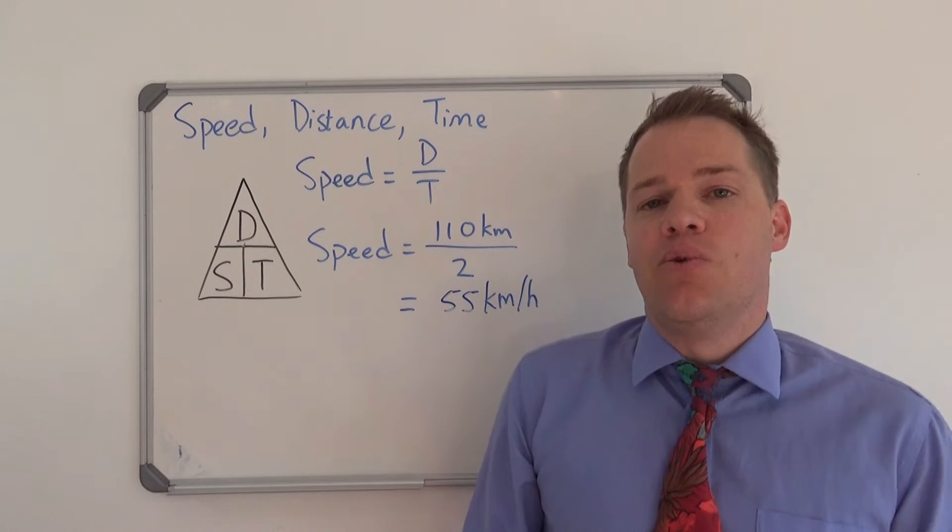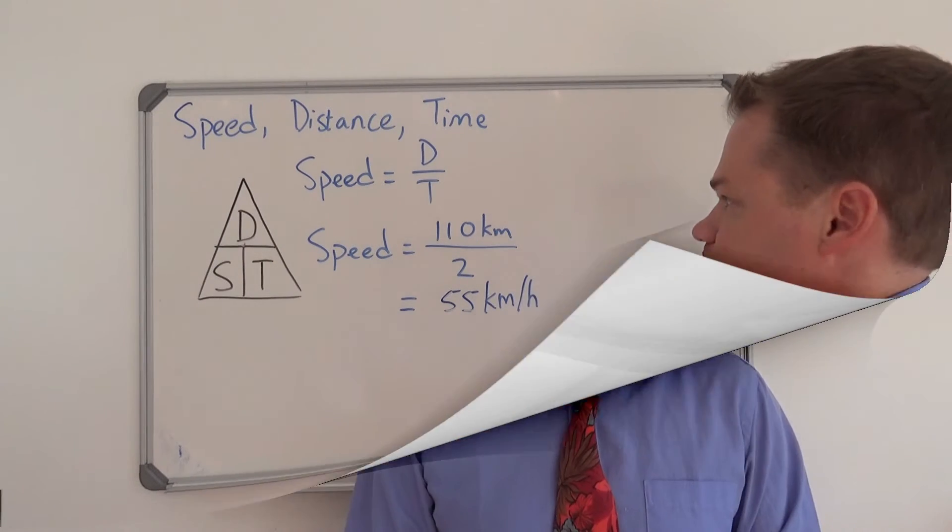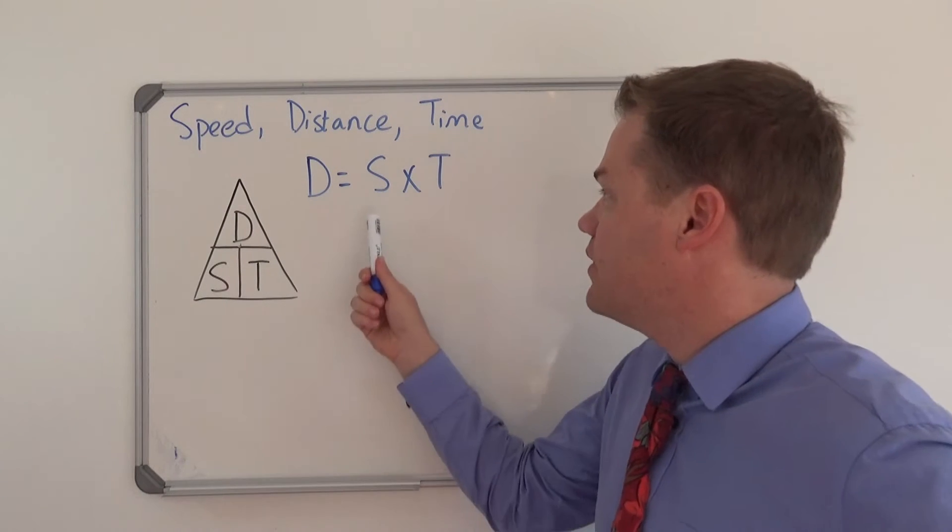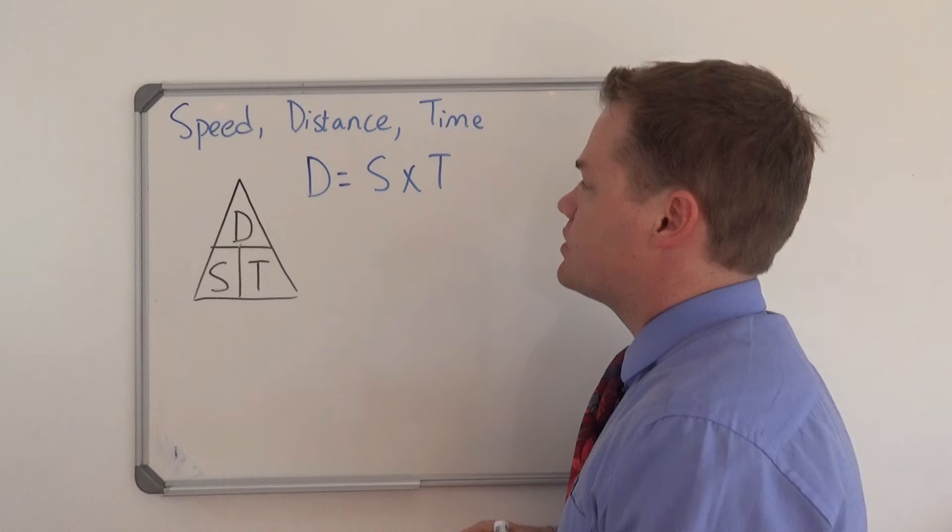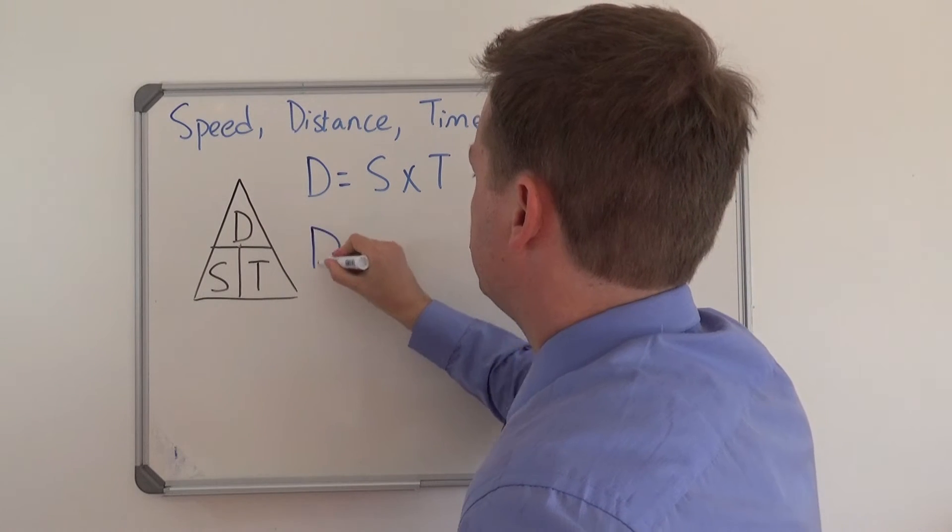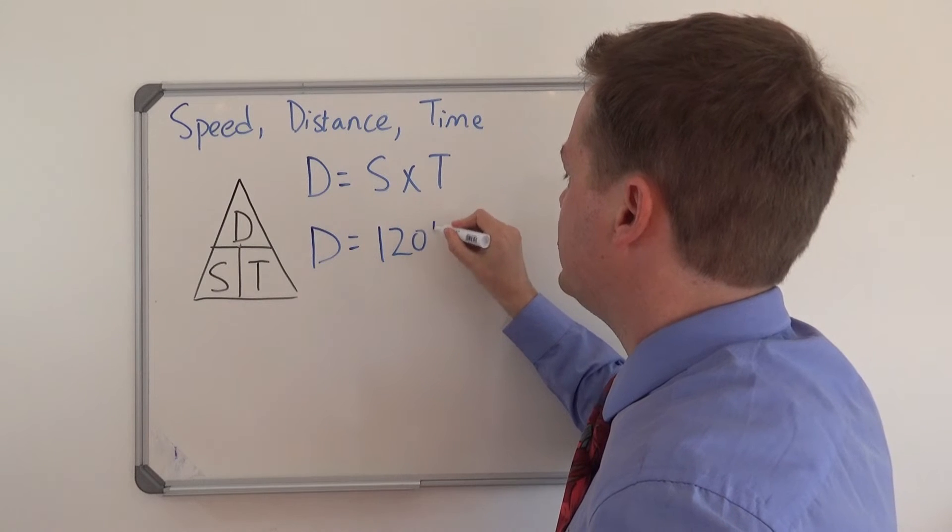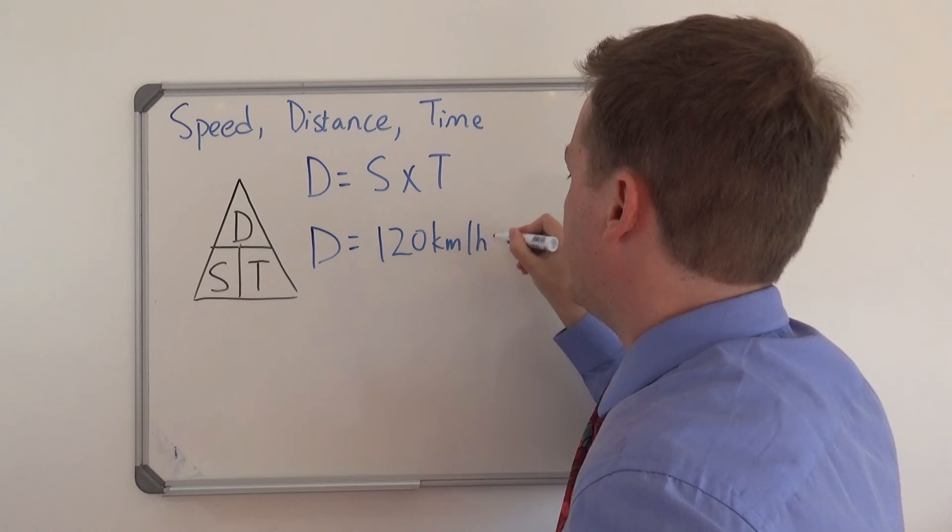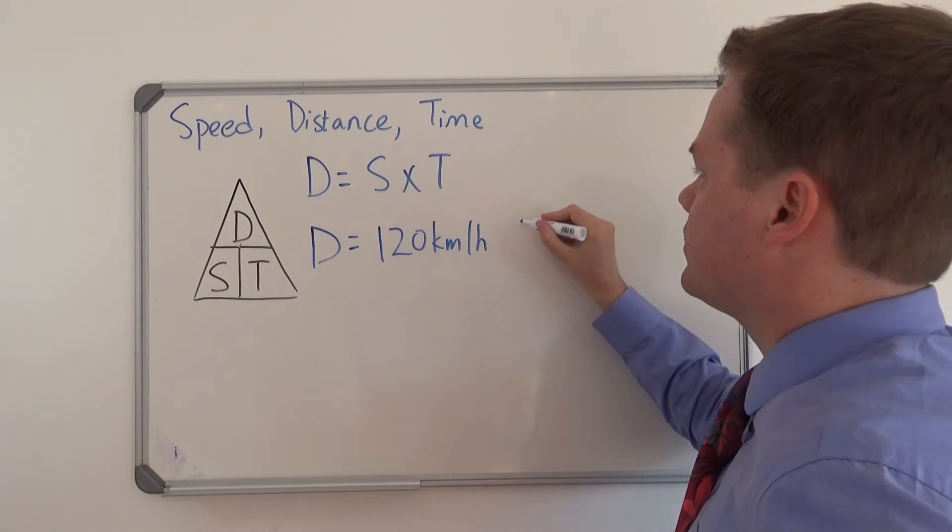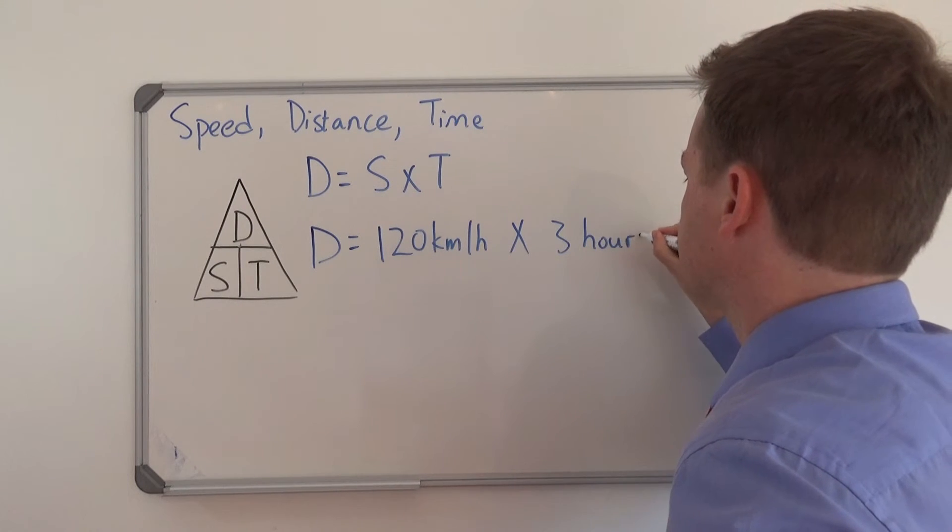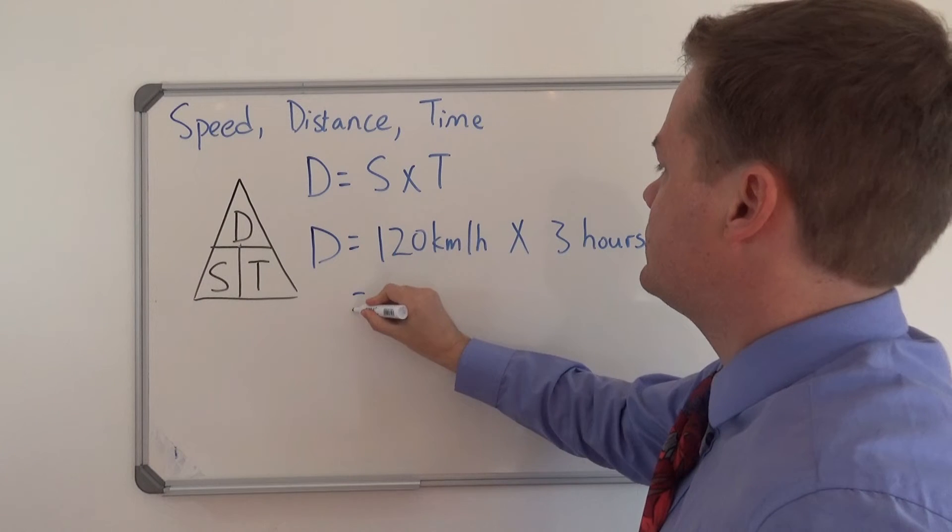We are going to do one more example. The last example we are going to do is to calculate distance by looking at the speed and time. So let's say for example you are traveling at a speed of 120 kilometers per hour and you do that for three hours, then your distance is going to be 360 kilometers.